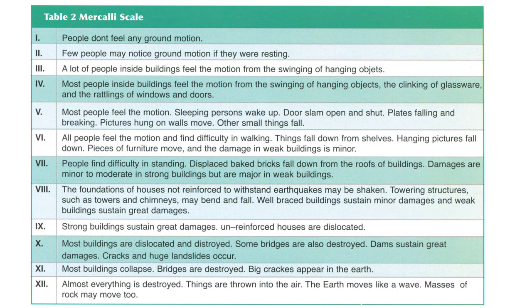Level 2: people can notice ground motion if they are resting, especially those inside buildings. Level 3: a lot of people inside buildings feel the motion from swinging of hanging objects. Level 4: most people inside buildings feel the motion from ringing hanging objects, rattling of windows and doors. Level 5: most people feel the motion, sleeping persons wake up, doors slam open and shut. Level 6: plates fall and break, pictures hanging on walls move, and other small things fall.